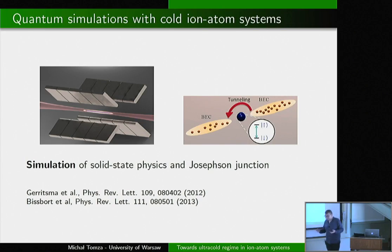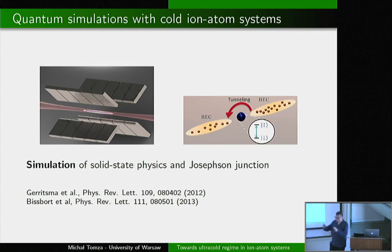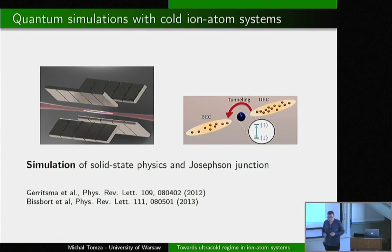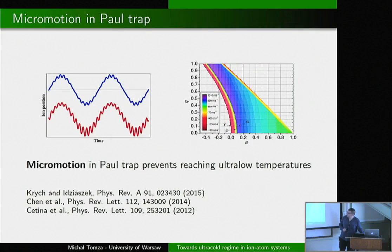From the perspective of quantum simulations, simulations of solid-state physics are particularly interesting. One proposal involves a linear chain of heavy ytterbium ions in a trap surrounded by fermionic atoms. Fermions around these heavy ions can form a band structure and simulate properties of real materials. An experimental group is on the way to realizing this, making it an important justification for this work.